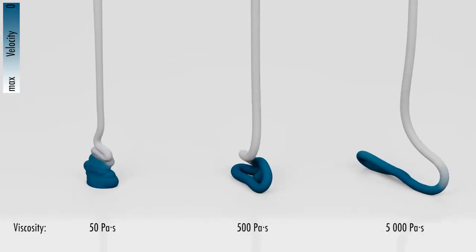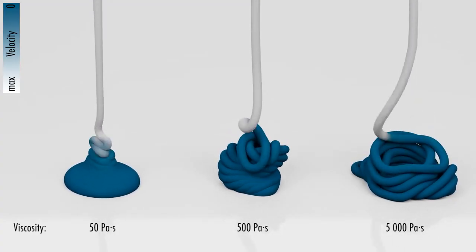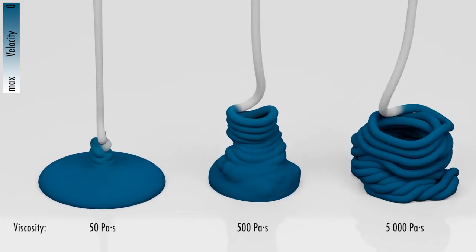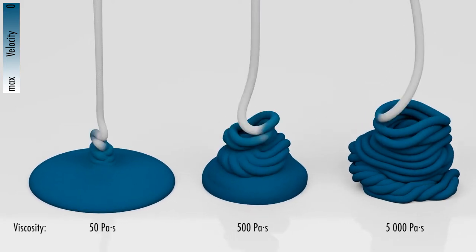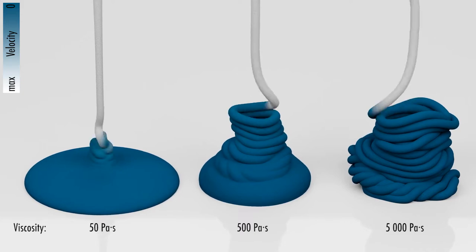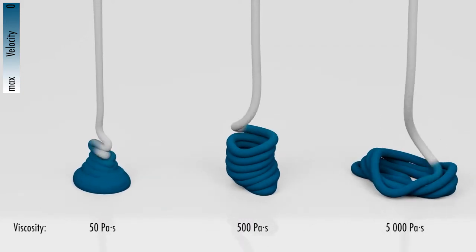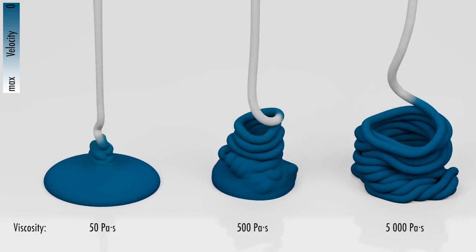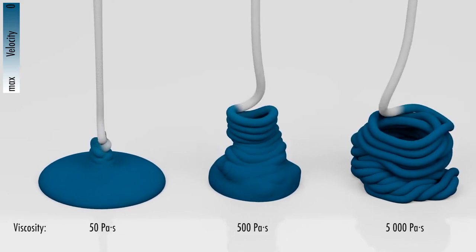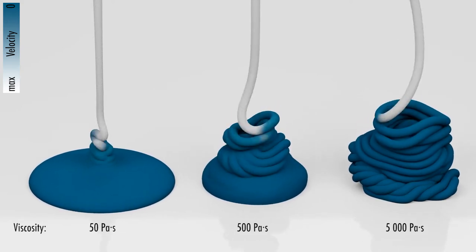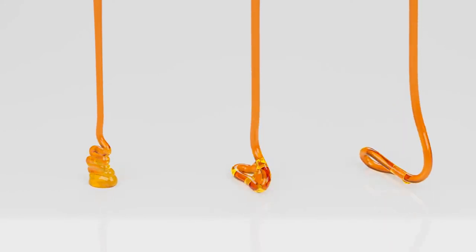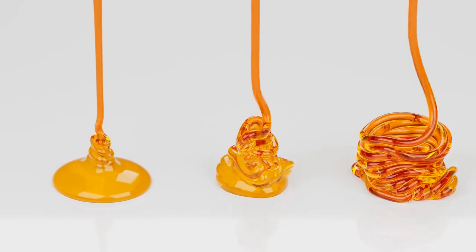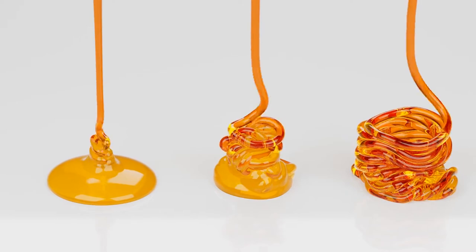Jets of viscous liquid hit the ground plane. From left to right, the viscosity coefficient is increasing. Both buckling and coiling effects are observed in our simulations. We achieve speed-up factors of 2.13, 2.11, and 2.91 for the Poisson's equation part. For the viscosity equation part, speed-up factors of 2.23, 4.36, and 18.34 have been measured.